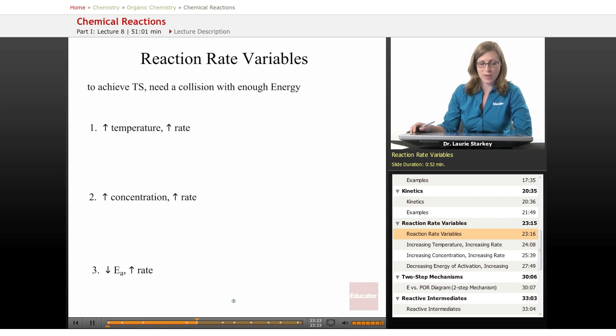And remember to do our reaction, we need to achieve our transition state in order to go from starting materials to product. Let's review that we have our energy versus progress of reaction diagram. And whether a reaction is endothermic or exothermic, either way, you still need to go through some kind of transition state to have that product, have that reaction occur.